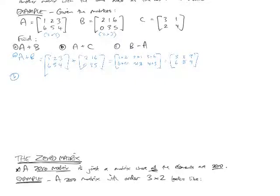Question B, A plus C. Well, A and C, you'll notice, do not have the same order. This is 2 by 2. So you have to say, A and C do not have the same order, so cannot be added. Therefore, no solution. So you cannot actually add or subtract matrices together that don't have the same order.